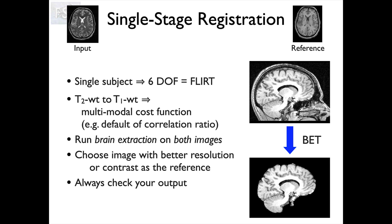There will be a difference between the input image and the reference image — they're treated slightly differently. The reference image will not be moved; the input image is the one which will be transformed to match the reference image. Registrations tend to go better if we use the image with better resolution or contrast as the reference image. If you can't tell which is better, then it doesn't matter. But if one has clearly worse resolution or contrast, it's better for that to be the input image rather than the reference.